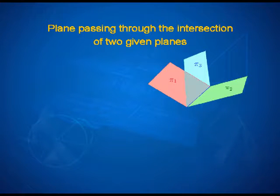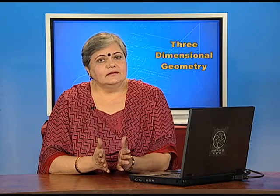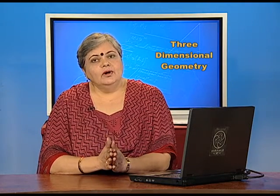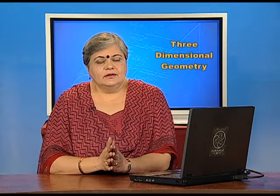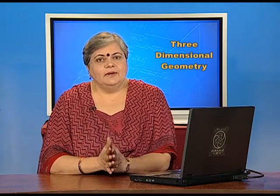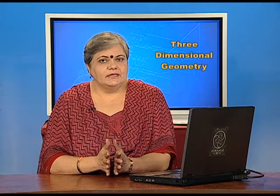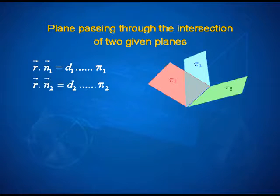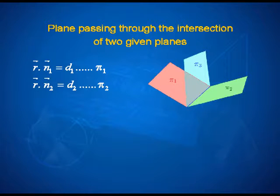Today our focus is on planes passing through the intersection of two given planes. When two planes intersect, they intersect in a line, and through a line infinitely many planes can be drawn. We will be discovering the family of planes passing through the intersection of two given planes. In the figure you can see plane π1 and π2 intersecting in a line, and we need to find the equation of a plane π3 passing through that line. The equations of π1 and π2 are r dot n1 equal to d1 and r dot n2 equal to d2.